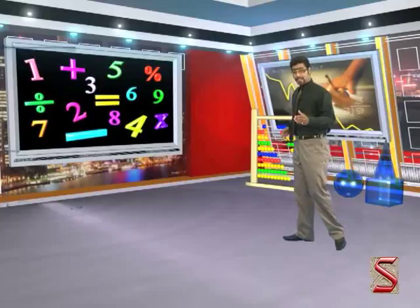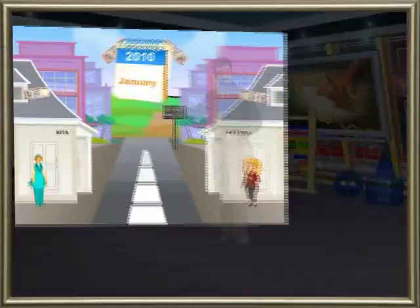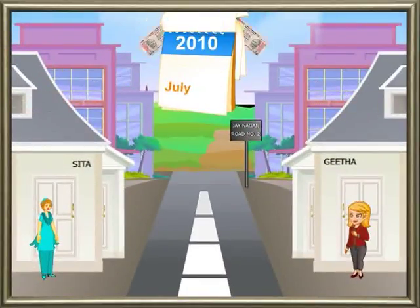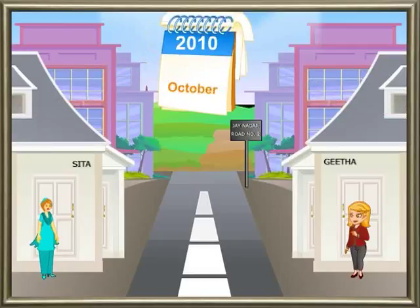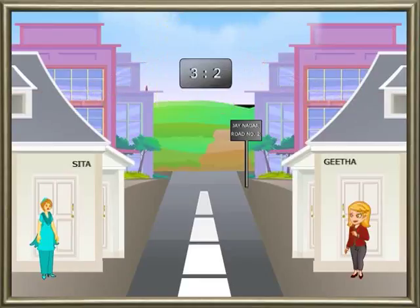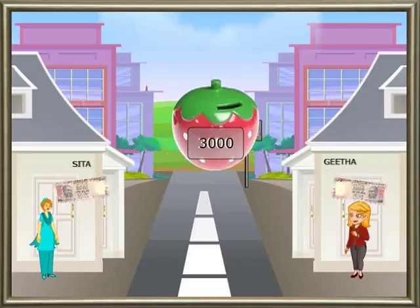Usually, we check and note the expenditure of our family in comparison with the income of our family. This kind of comparison of income and expenditure helps us improve our savings quantitatively. Annual incomes of the families of Sita and Gita are in the ratio of four is to three and their annual expenditures are in the ratio of three is to two. What is their annual income if they save rupees 3000 in a year?